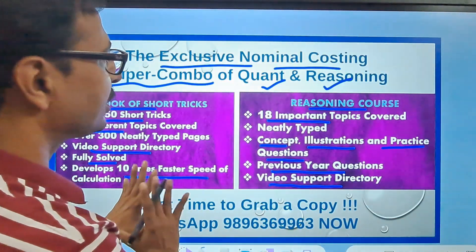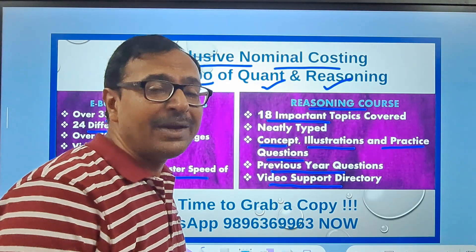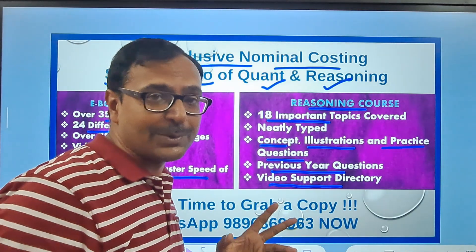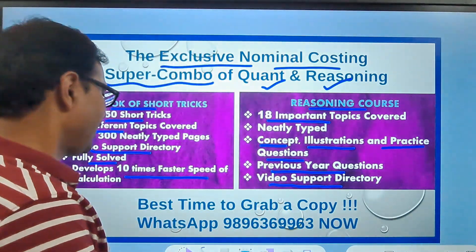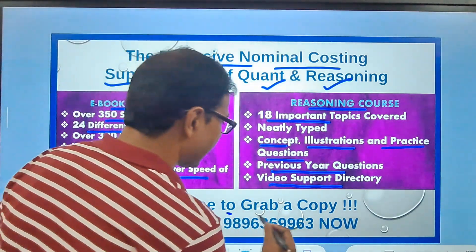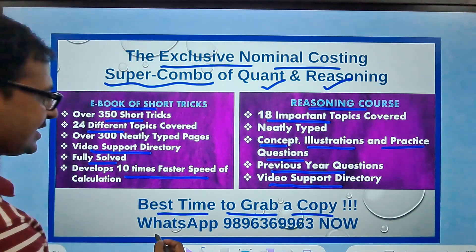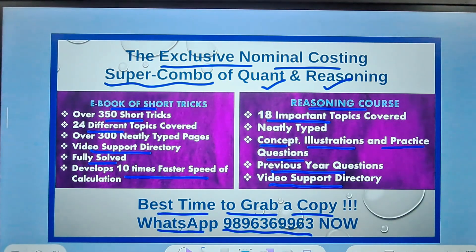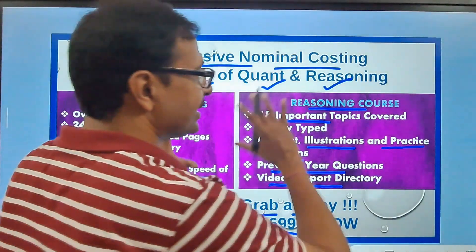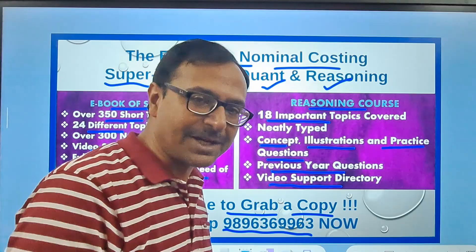The cost of this super combo will surprise you — it took us 5 years to make it, and it costs less than a family dinner. The festive offer is going on right now. Send me a message on WhatsApp at 9896369963 to get a copy. It's written in English so everyone can study from it.